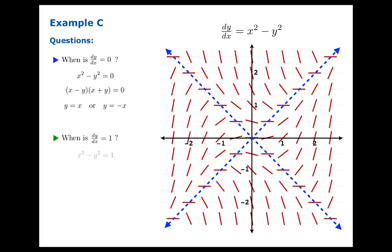We could pick another value of dy/dx. When is x squared minus y squared equal to one? You should recognize that equation as the equation of a hyperbola. We sketch that hyperbola, and it seems plausible that the slopes anywhere along that hyperbola appear to be one.